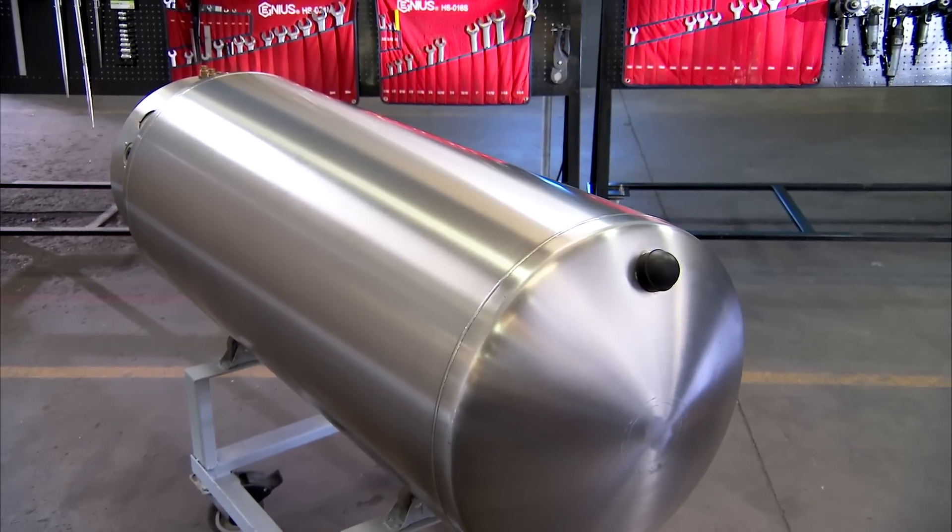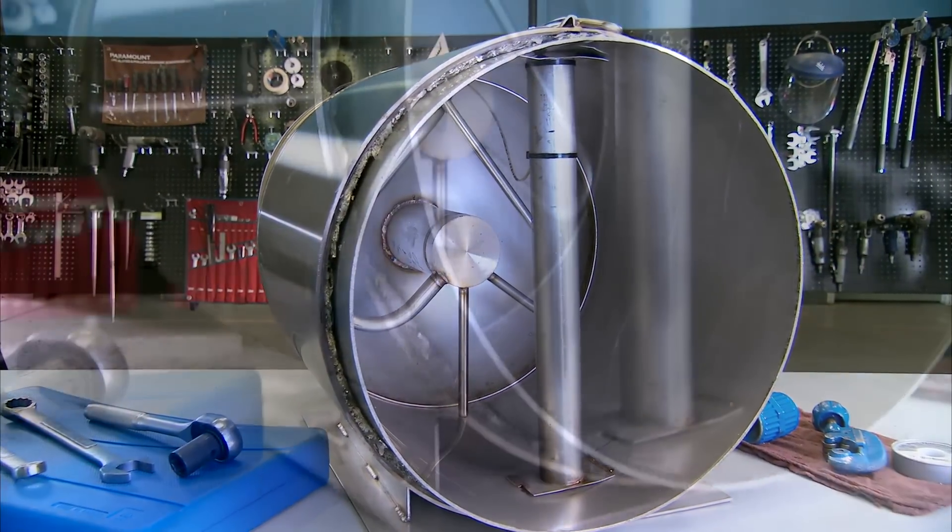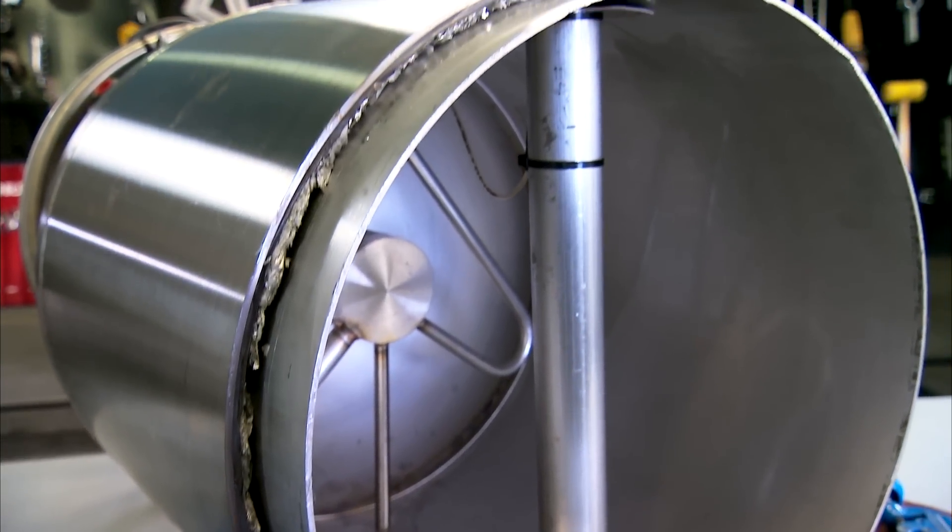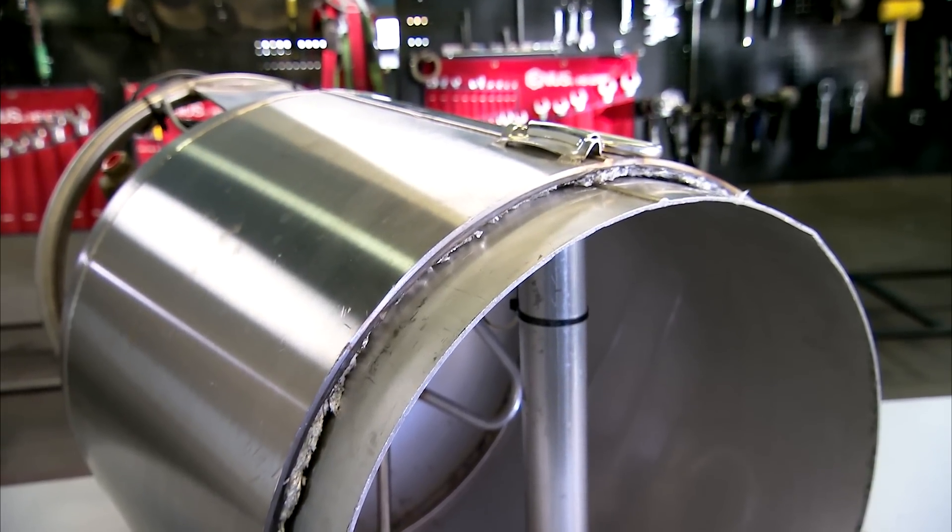Let's begin with the tank itself. There are actually two tanks, one inside the other. The inner tank is wrapped with multiple layers of insulation, and the space between the tanks is vacuum sealed, much like a thermos.